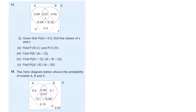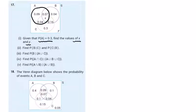Questions 17 and 18: given that the probability of A is 0.3, find the values of x and y. Looking at the diagram, I have 0.09, 0.07, and 0.04, and 16.